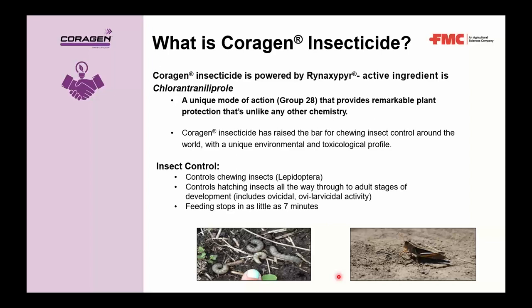Corrigan is a Group 28 insecticide with the active ingredient chlorantraniliprole, also trademarked as Rynaxypyr. This class of insecticides really changed the game with its unique environmental and ecotoxicological profile. Group 28s control chewing insects — the Lepidoptera order — and work across the full life cycle: ovicidal, larvicidal, and depending on species, will also control adults. This is ingestion-based, meaning insects need to consume treated tissue.